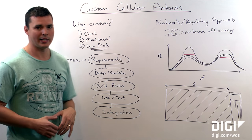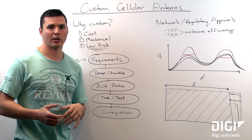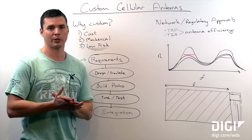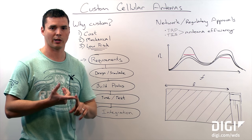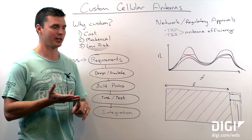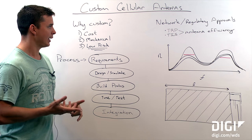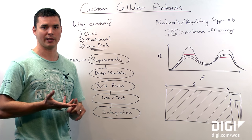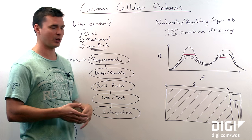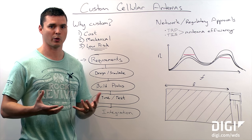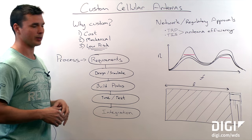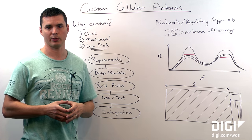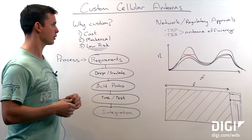When you're designing a cellular product, you're going to have to go through additional approvals. You're going to have to go through Verizon approvals, AT&T, or T-Mobile, in addition to CTIA, PTCRB, and FCC. So there are going to be some additional requirements beyond what you might be used to if you've done a Wi-Fi or Bluetooth device.